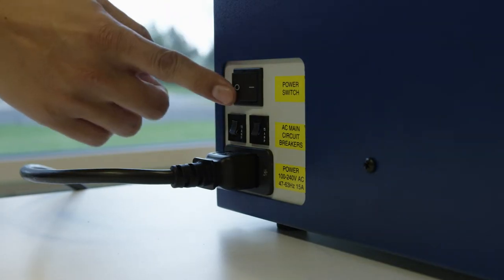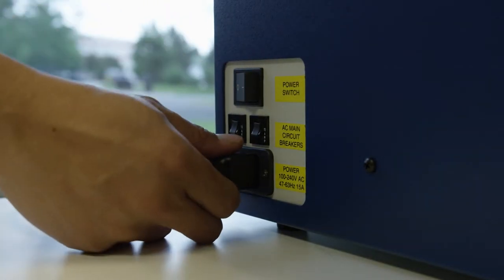In this video, we'll walk you through cleaning the Epilog Mini and Helix's optics. Start by shutting off the laser and remove the power cord from the machine.